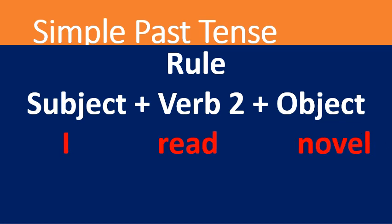One more example of simple past tense: 'I read a novel.' Here 'I' is the subject, 'read' is the verb in the second form (past tense), and 'novel' is the object. 'I read a novel' is an example of simple past tense.